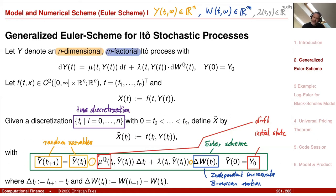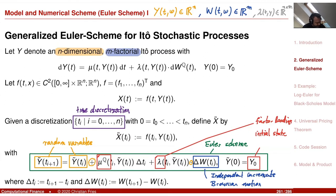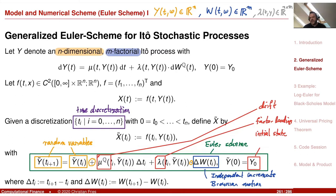We also specify lambda, which we call the factor loadings — these are the coefficients in front of the stochastic factor. So let's write the drift on top and the factor loadings here. These three — the initial value, the drift, and the diffusion coefficient — specify the model.